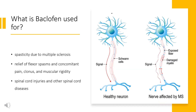What is Baclofen used for? Baclofen is given intrathecally, directly into the spinal cord, or orally, by mouth. Oral Baclofen is administered for the treatment of spasticity due to multiple sclerosis and is particularly useful for the relief of flexor spasms and concomitant pain, clonus, and muscular rigidity. It may also be used to treat patients with spinal cord injuries and other spinal cord diseases. Intrathecal Baclofen is used for the management of severe spasticity of cerebral or spinal origin in patients 4 years of age and older.